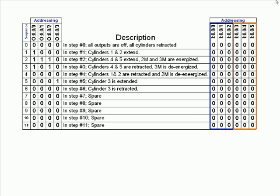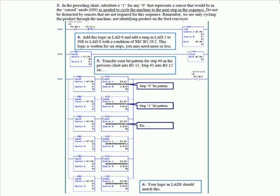You see in step one for the outputs it says cylinders want to extend — well, we don't extend them until the photo eye sees the part there in front of cylinder two. So you'll have to add that in at some point — the product recognition which is required to go to the next step. So all you do here was go in and change the zeros to ones that represented the result of the motion caused by the outputs that were energized in the same state.